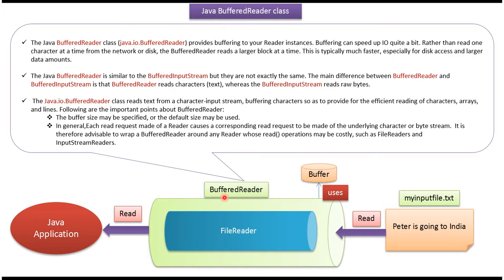BufferedReader provides buffering to reader instances — in this case, buffering to a FileReader. BufferedReader performance is good because it reads a larger block at a time instead of one character at a time. BufferedReader is similar to BufferedInputStream, but they are not exactly the same, because BufferedReader reads characters while BufferedInputStream reads raw bytes. BufferedReader internally uses a buffer to improve the performance of read operations.